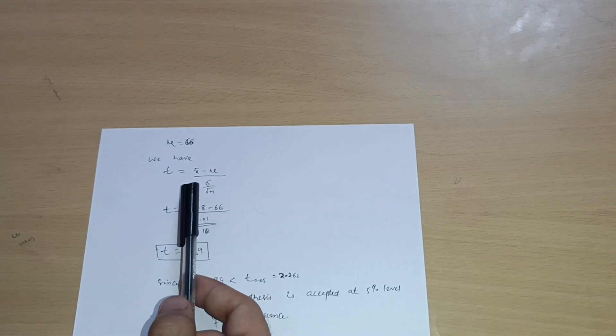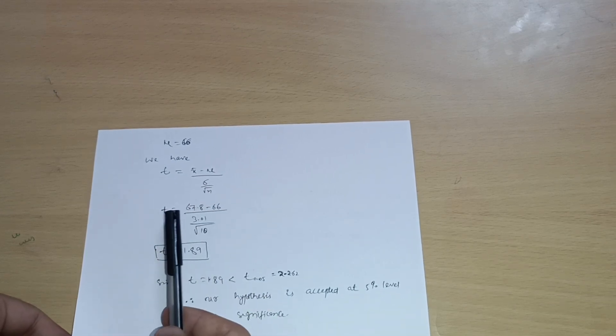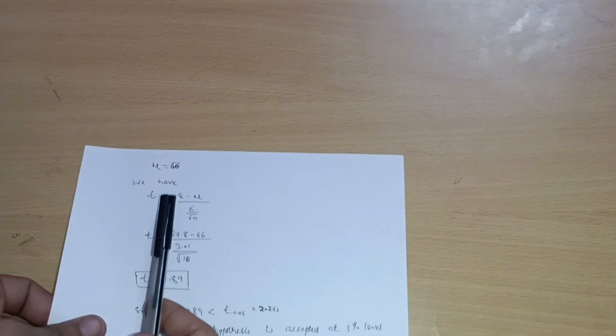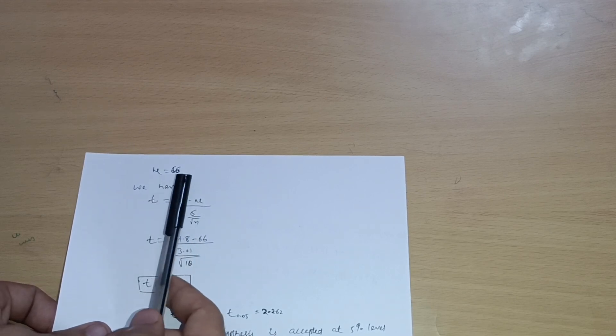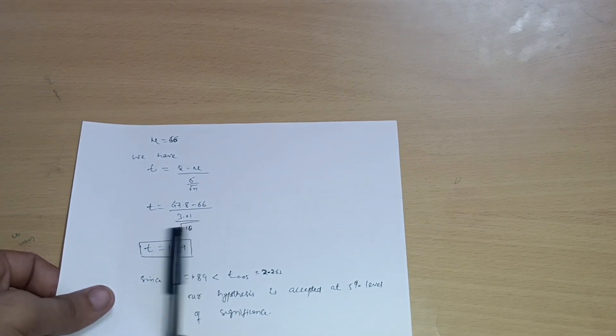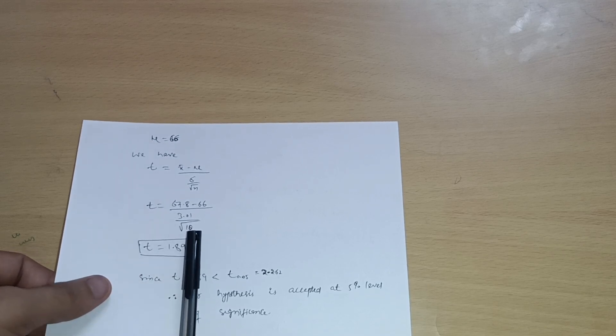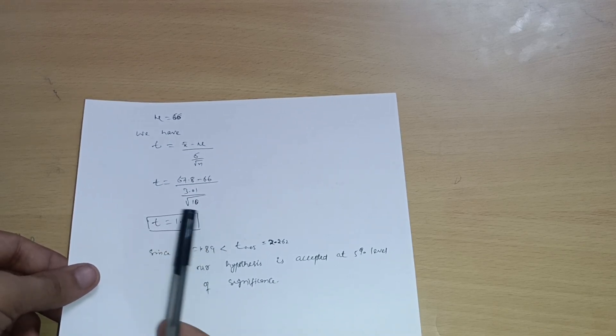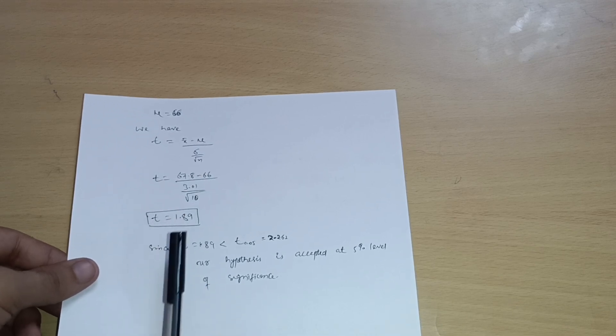So t is equal to x bar. We already know 67.8, we have calculated this one. See here, x bar is equal to 67.8. So 67.8 minus mu is equal to 66, divided by sigma already we have calculated 3.01, divided by root of n. n value is already 10 individuals. So t is equal to 1.89 you will get from this calculation.